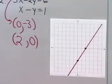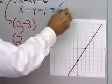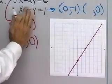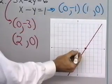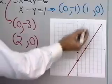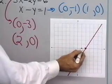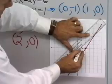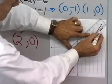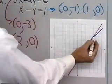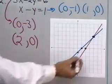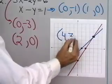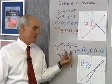Now I'll graph my other equation. When x is equal to 0, y is negative 1, and when y is equal to 0, x is equal to 1. So x is 0, y is negative 1, and x is 1, y is 0. Let's draw a line between those two points. It looks like they intersect right here at x equal 4, y equal 3. So x is equal to 4, y is equal to 3, and that should be the only point that satisfies both of these equations.